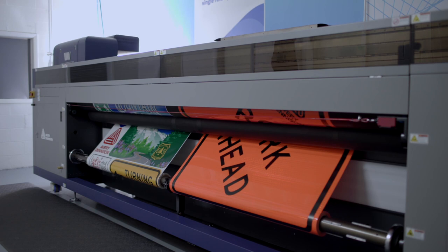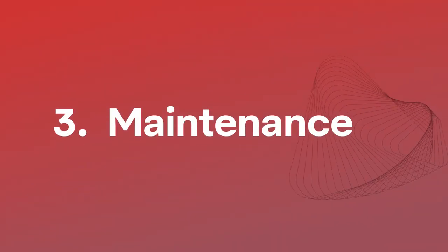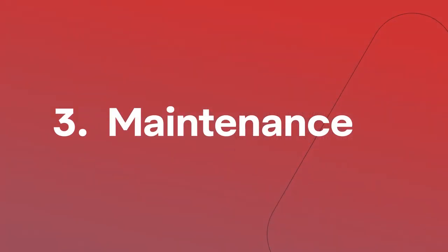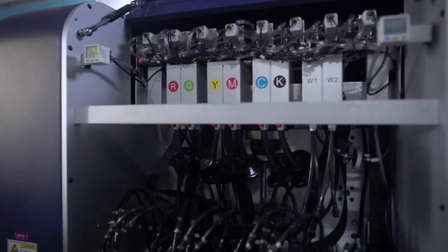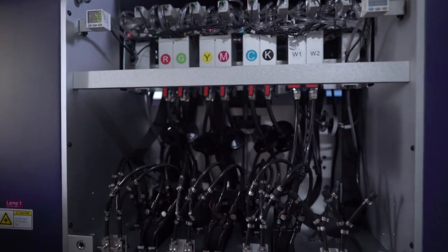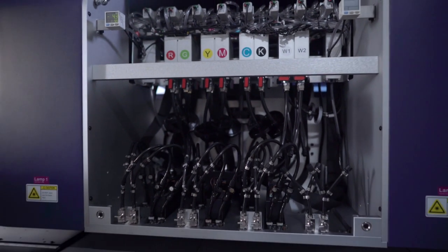The print job is now complete. For this section the carriage will be moved all the way to the right of the printer giving a better view of what is going on inside. If you look at the top rail you will see a series of colored dots. R, G, Y, M, C and K.